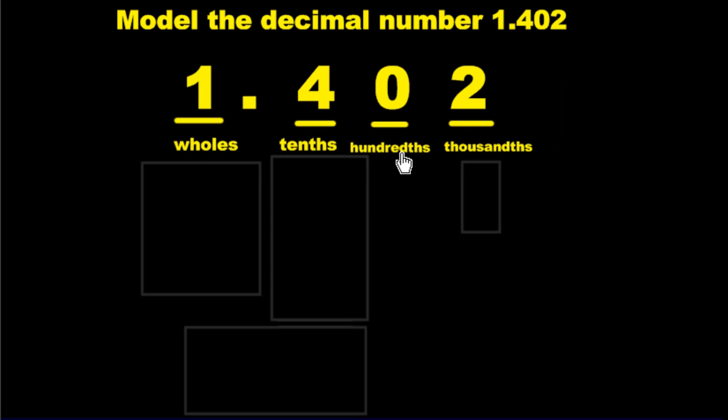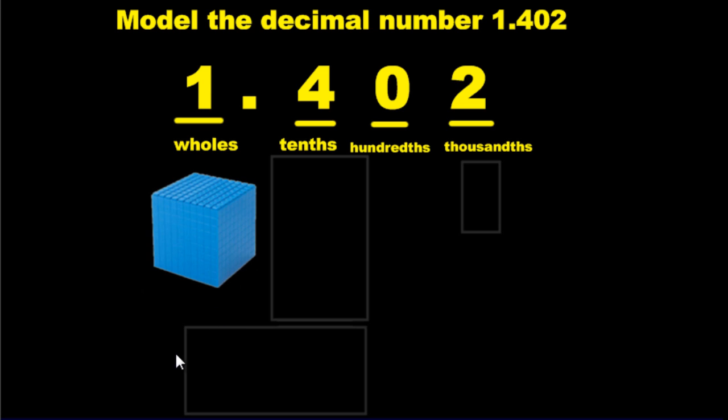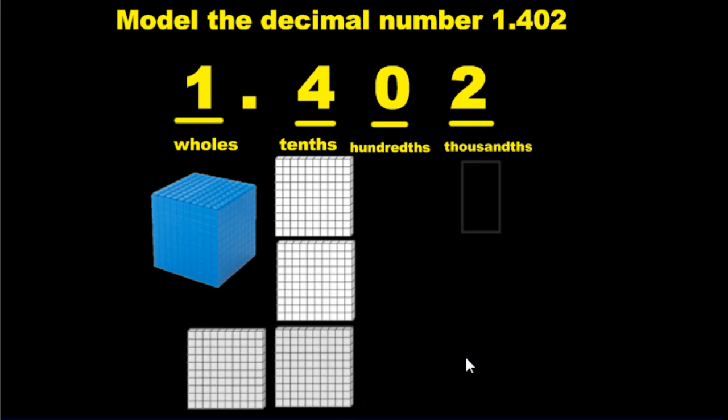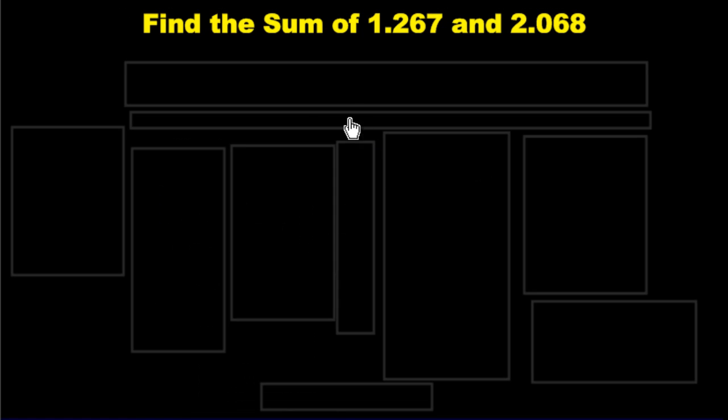We write all the values underneath and then we just draw it out. We need one whole, I'll give you a whole. We need four tenths. Let's do it. That's two, we need two more. Anyway, enough of that. We've got zero hundredths so we don't draw anything. We need two thousandths. Now let's use that knowledge and apply it to addition.